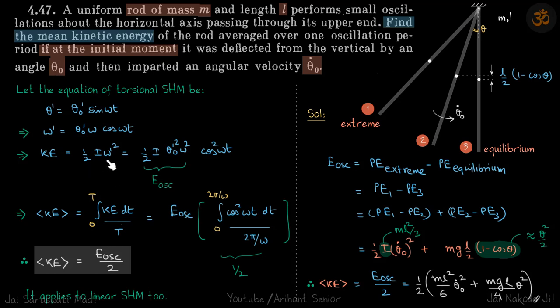...instead of ½Iω'² you will have ½mv². You will see that the equation comes to be the same. Now in this problem, let's use this formula where what we need to find is E_oscillation/2.